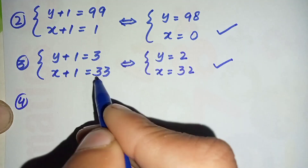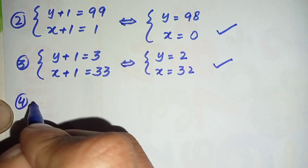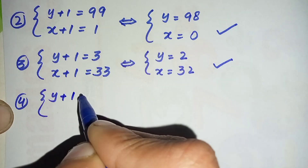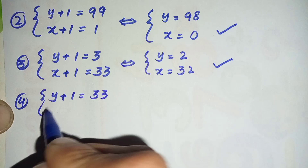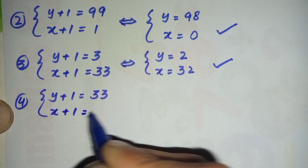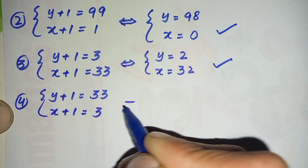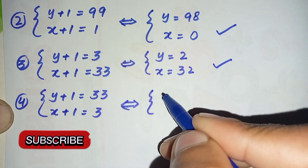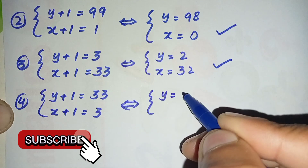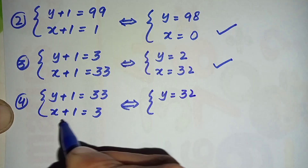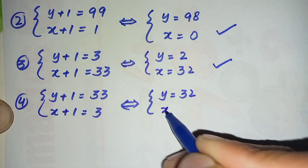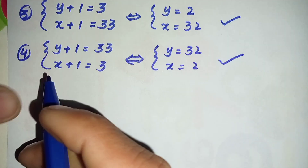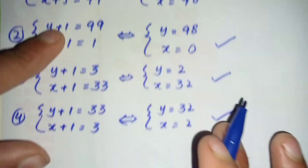For the fourth pair, we compare (y + 1) = 33 and (x + 1) = 3. So y = 33 − 1 = 32 and x = 3 − 1 = 2. This is our fourth pair of solutions: (x, y) = (2, 32).